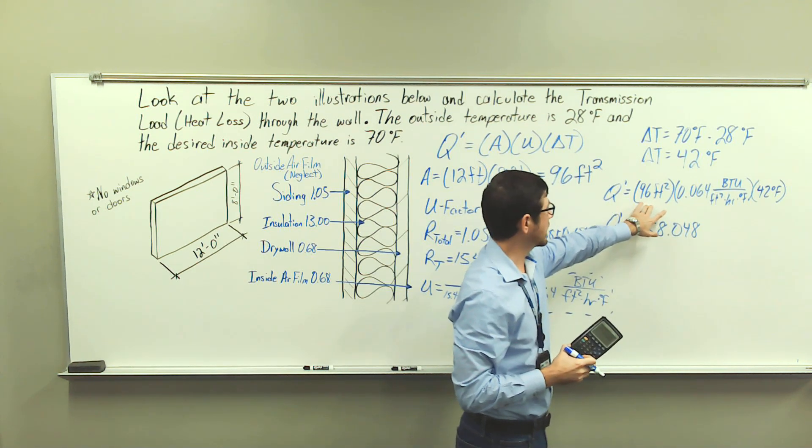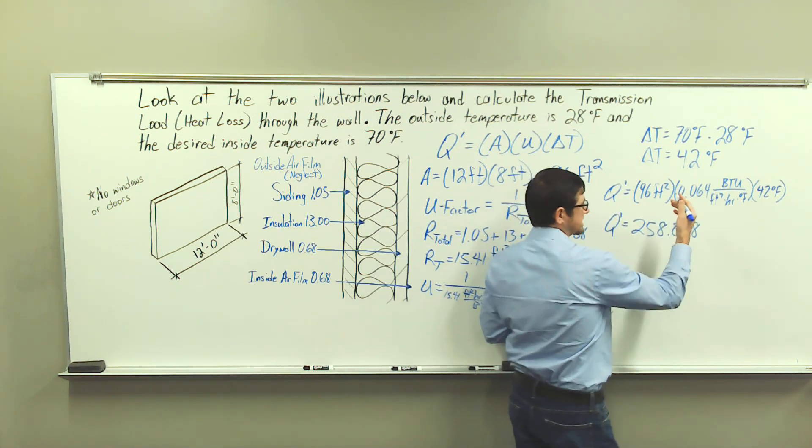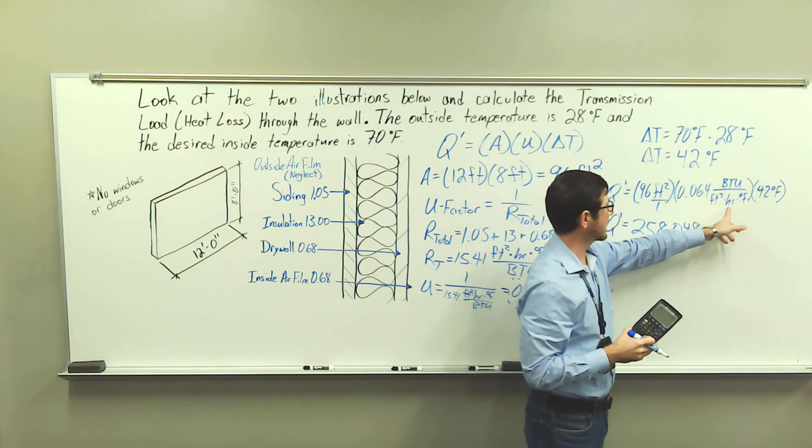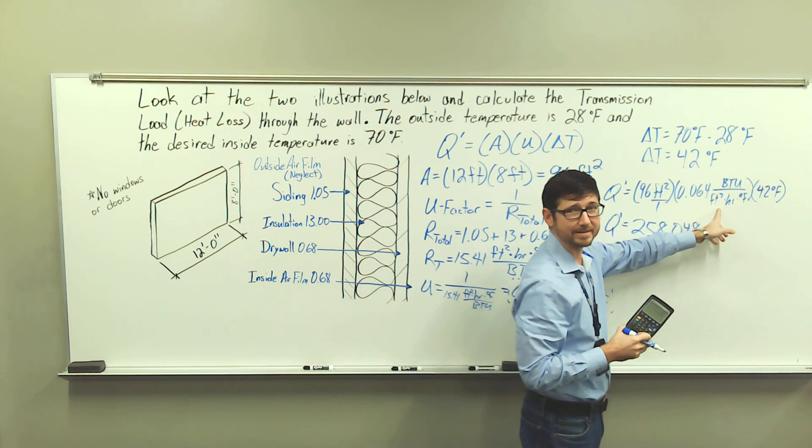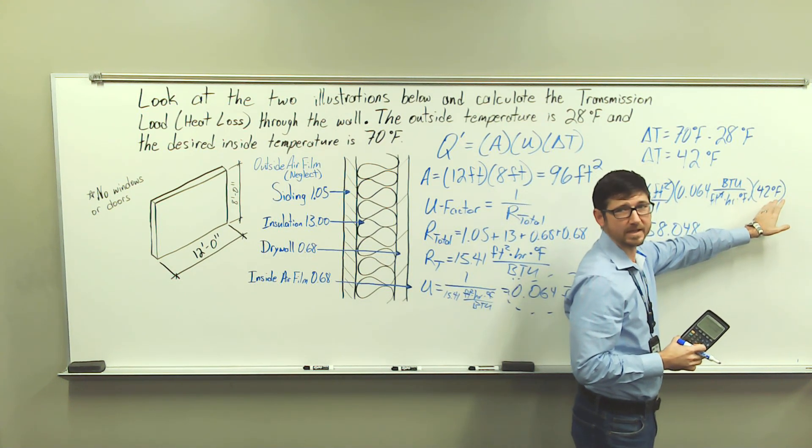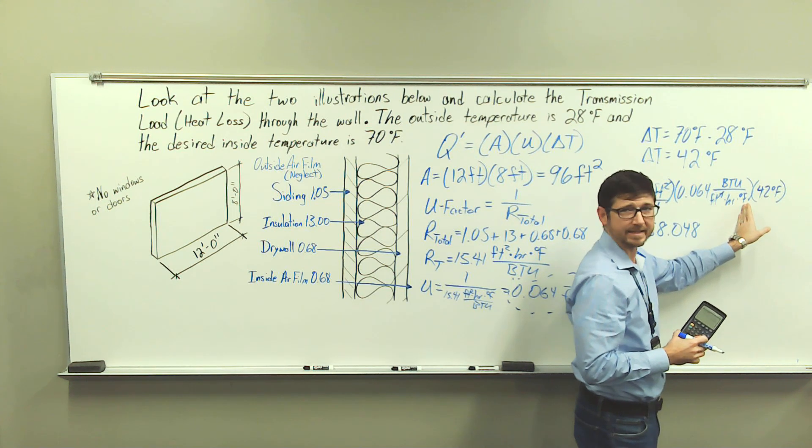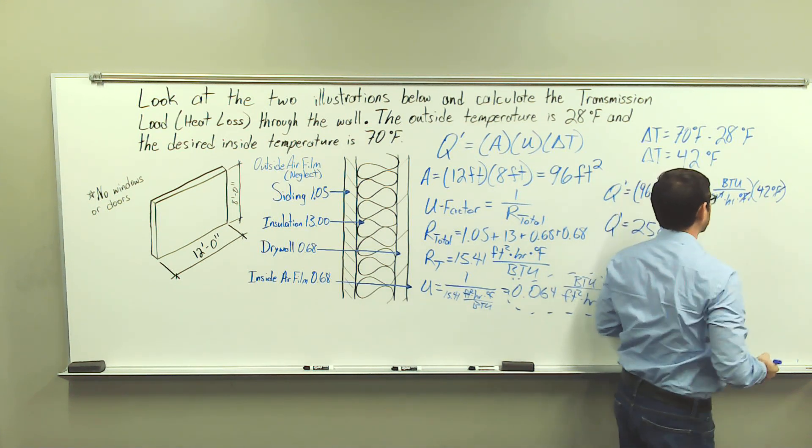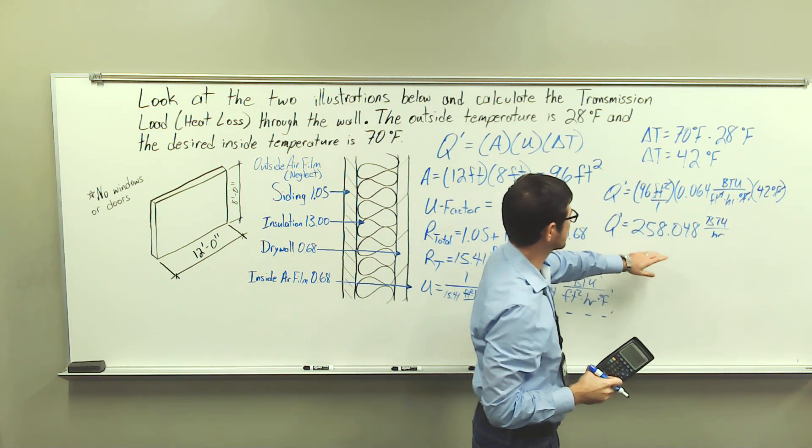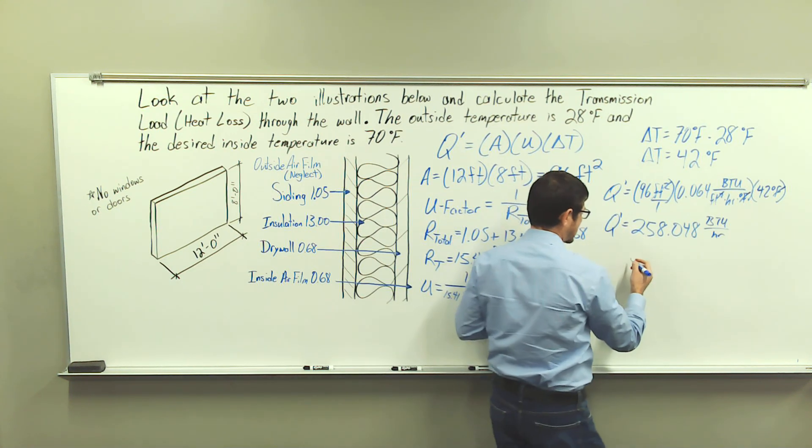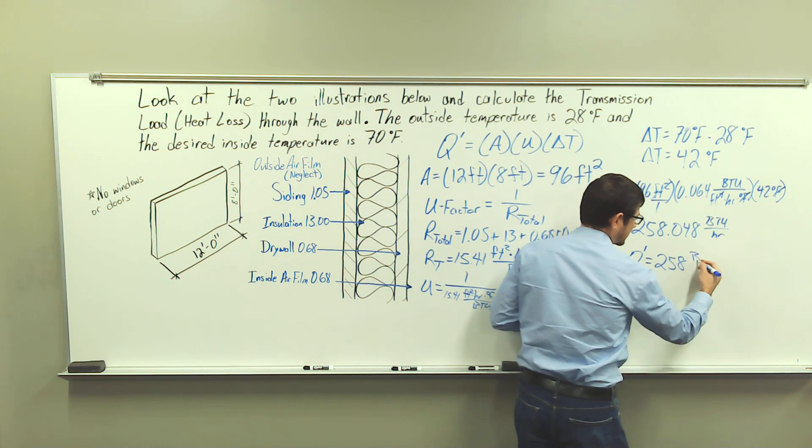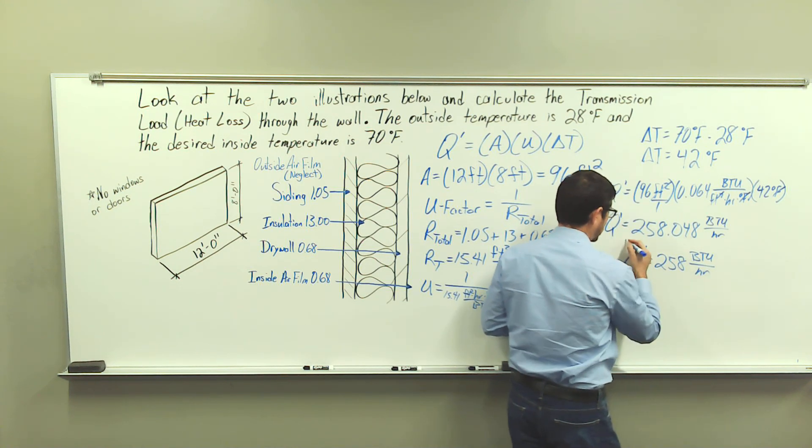All right, we have foot squared, and we can also write this algebraically. This is foot squared over 1, so it's in the numerator, and we're multiplying it here. And I have foot squared in the denominator, so foot squared is going to cancel. And then we have degrees Fahrenheit here in the numerator and Fahrenheit in the denominator, so these will cancel. And this gives me BTUs per hour. And I'm just going to go ahead and round to the ones place here. So my heat loss, Q prime, is equal to 258 British thermal units per hour.